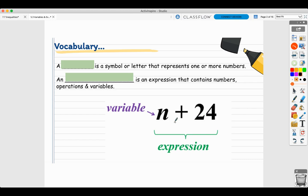Let's do some key vocabularies. A variable is a symbol or letter that represents one or more numbers. An algebraic expression is an expression that contains numbers, operations, and variables. In this case, n is a variable. It could represent any number, and n plus 24 is your algebraic expression.